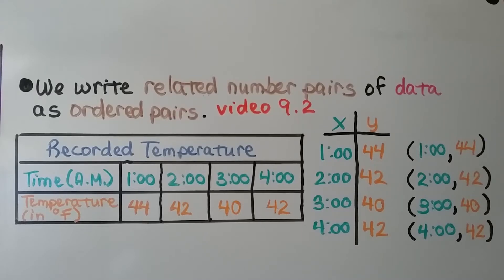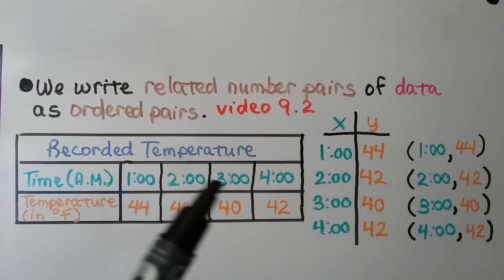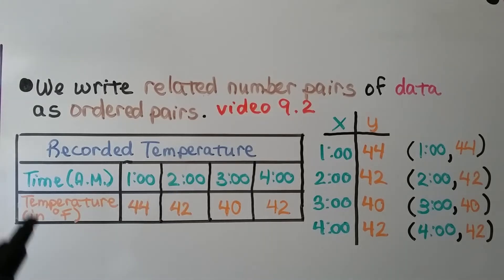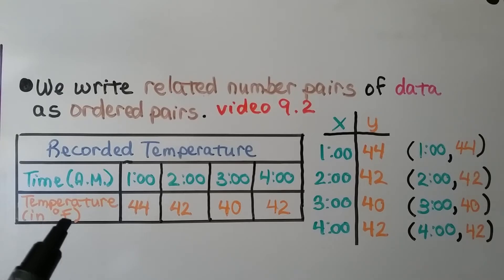We write related number pairs of data as ordered pairs. We learned about that in video 9.2, and it's linked in the description. So here we've got recorded temperature in this table, and it shows the time in a.m., that's morning, at 1 a.m., 2 a.m., 3 a.m., 4 a.m., and the temperatures in degrees Fahrenheit. This little symbol is degree, and the f is for Fahrenheit.